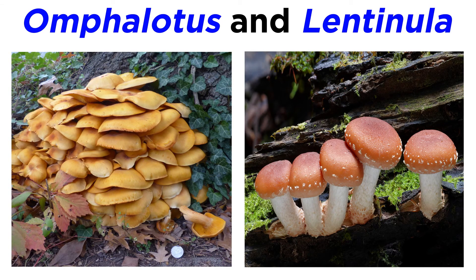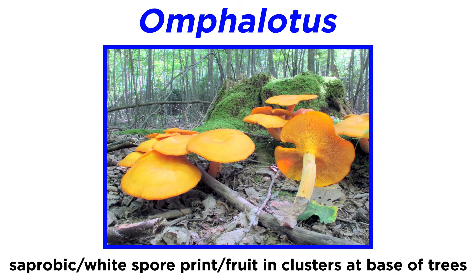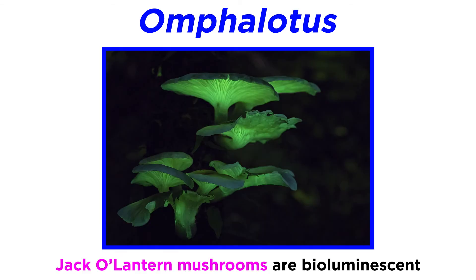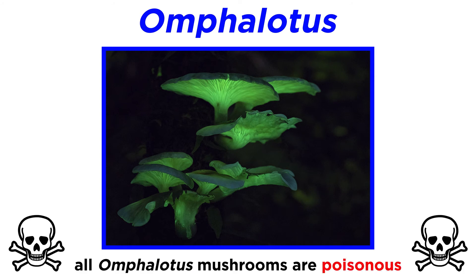Next we will move on to two genera that are part of the same family, Omphalotus and Lentinula. Mushrooms in the genus Omphalotus are saprobic, have a white spore print, and generally fruit in clusters at the base of tree trunks. A number of species within the genus have the common name jack-o'-lantern mushroom because of their bright orange color and bioluminescent properties. These mushrooms have gills that run down the stipe, and when fresh specimens are taken into a dark room, you will be able to see an eerie white glow emanating from the gills. These mushrooms should only be looked at and not eaten, as all mushrooms in the genus Omphalotus are considered poisonous.